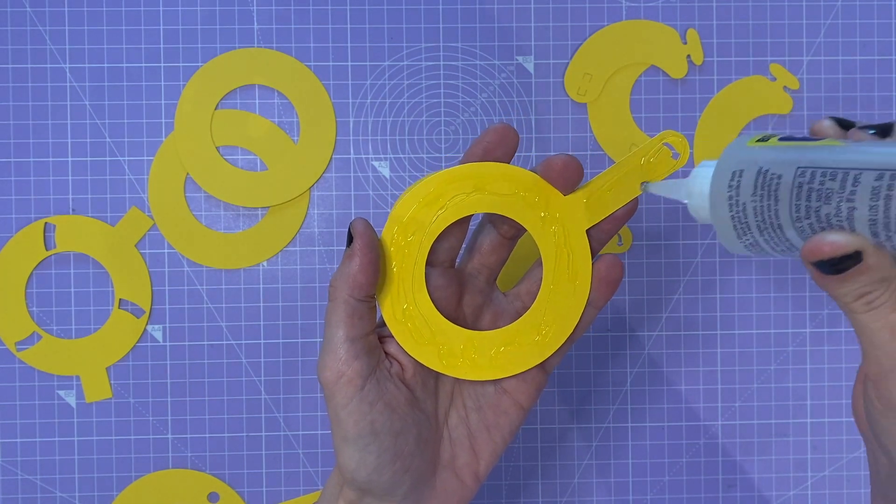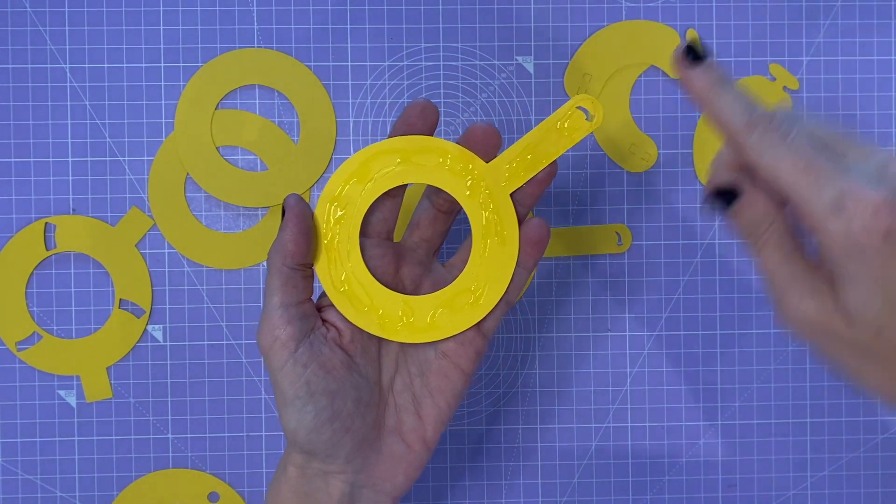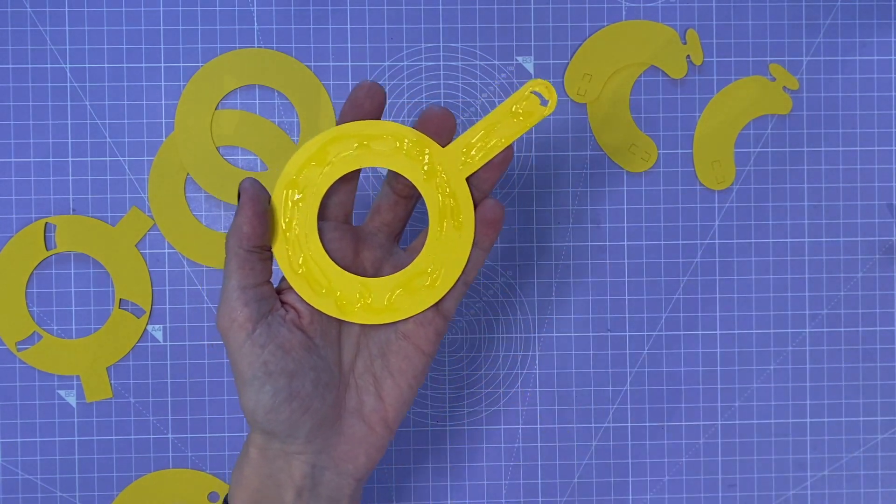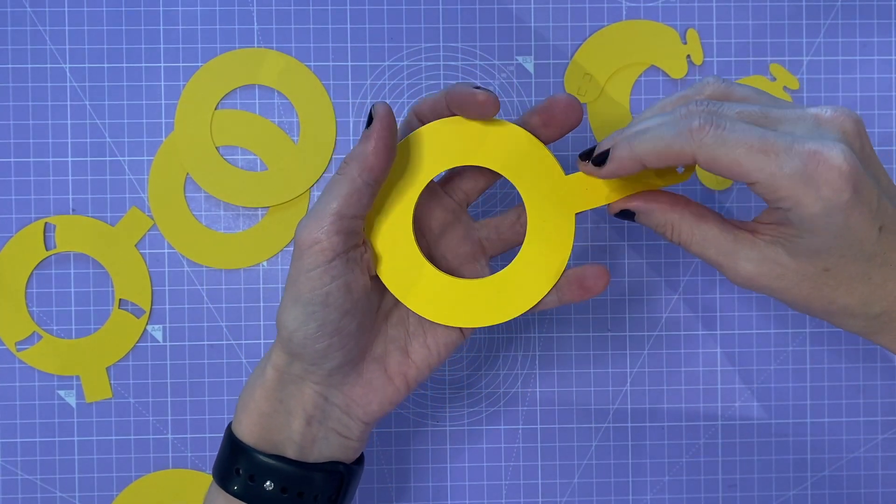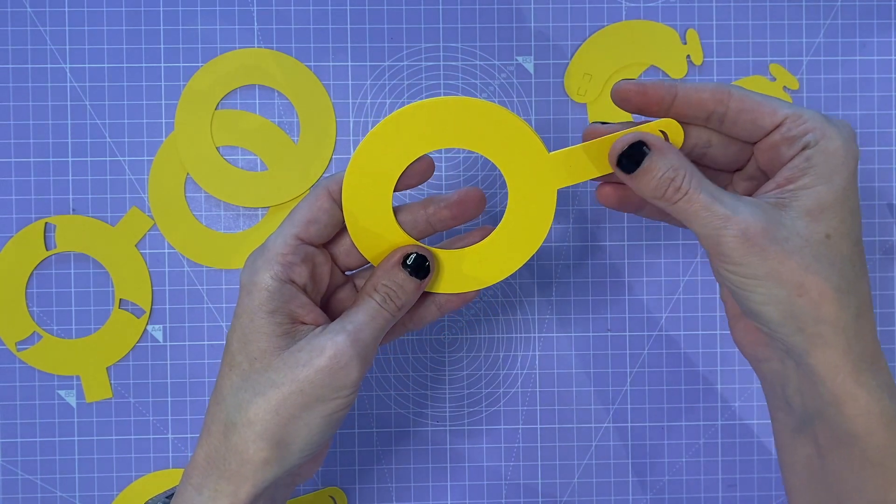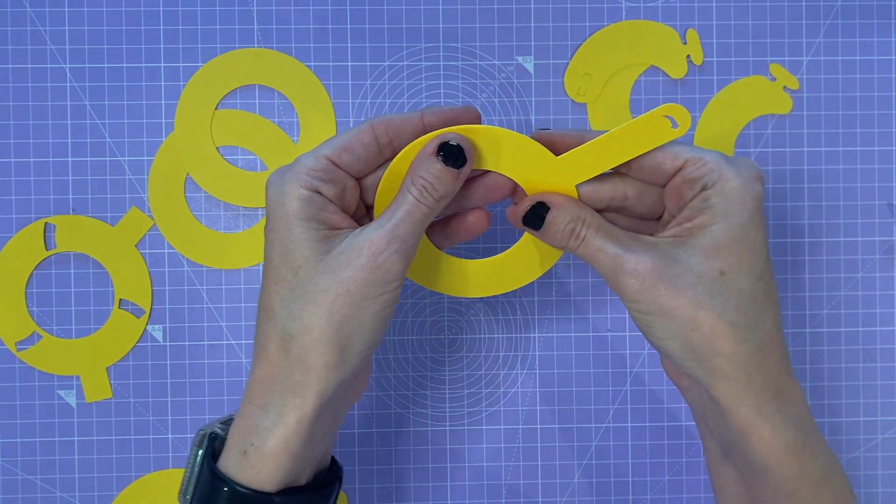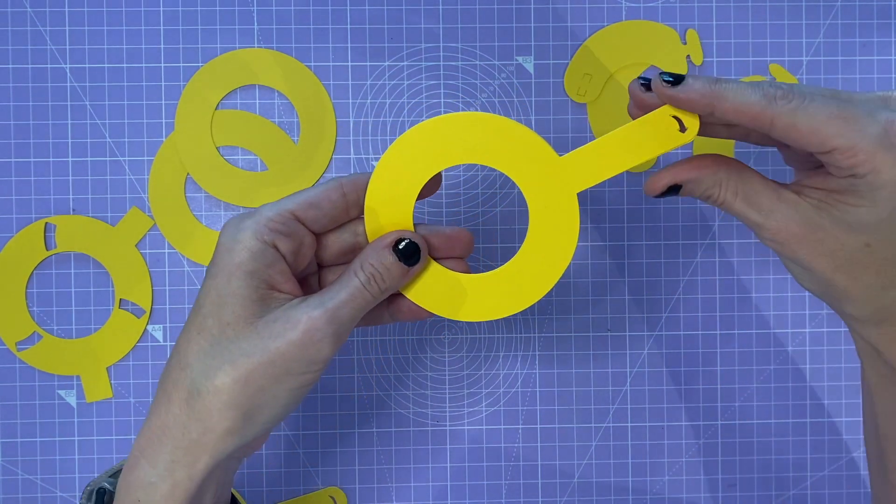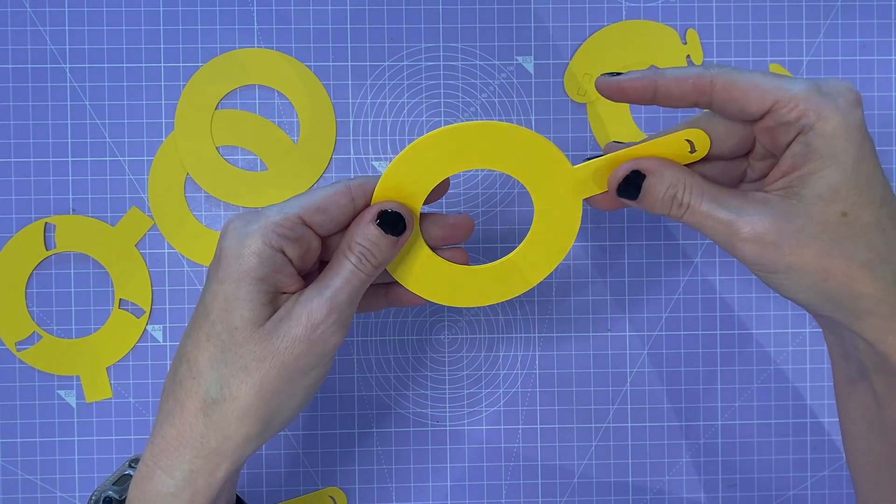I just thought maybe if we're using a longer handle it might be better to just double up on the strength of the handle. We don't want it to break, so we're just going to put those two together like that. Make sure your arrows are aligned.